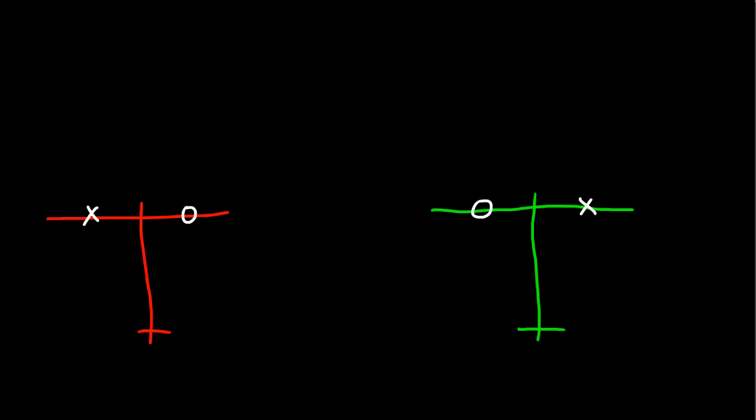And as always, we'll draw asymmetric thrust. So, asymmetric thrust acts in this direction and tends to turn the left-hand airplane to the left. Asymmetric thrust acts in this direction and tends to turn this airplane to the right.